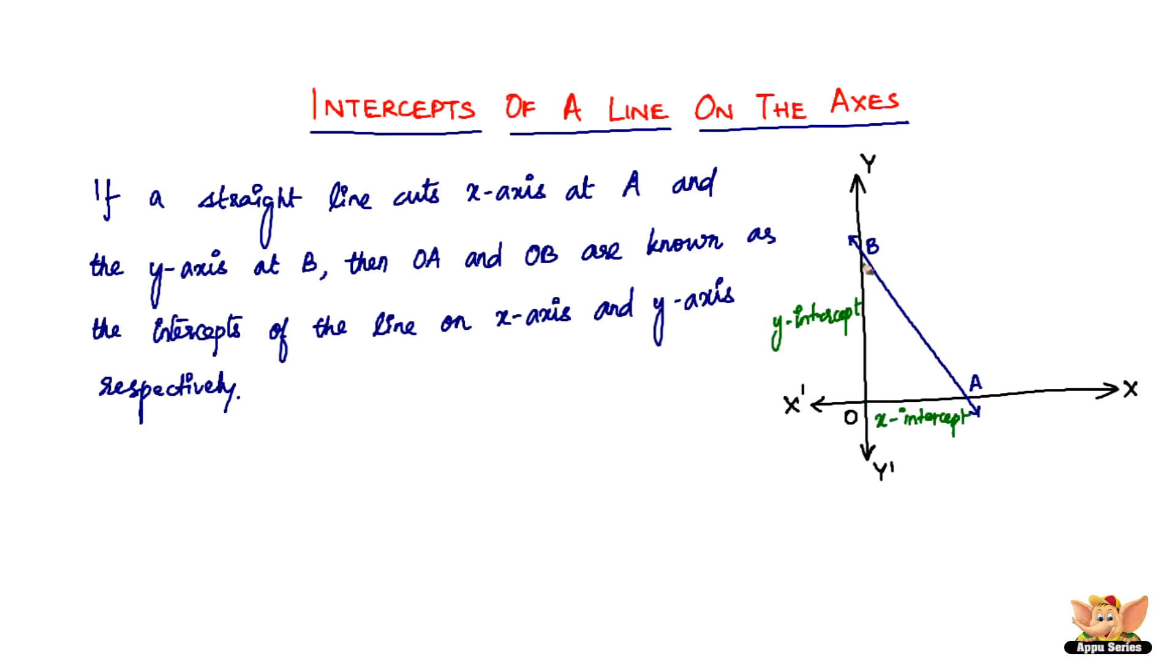The OY part of the y-intercept will be positive, and the OY-dash or the negative direction of the y-axis will have a negative y-intercept. This particular concept is called the intercepts of a line on the axes.